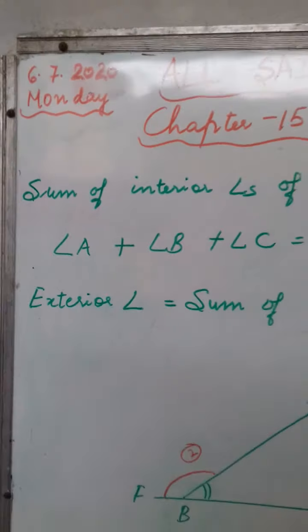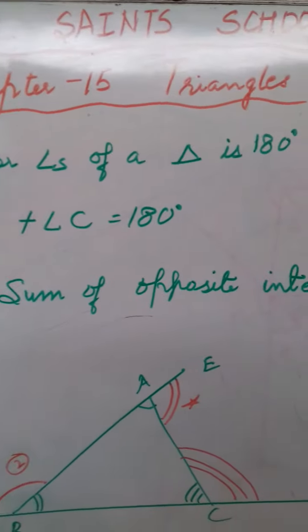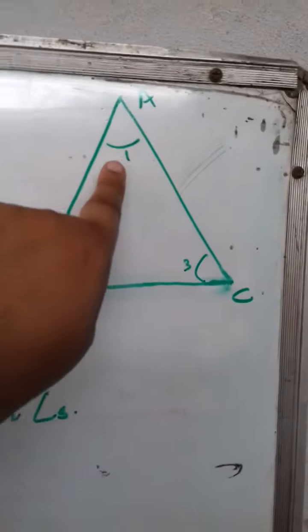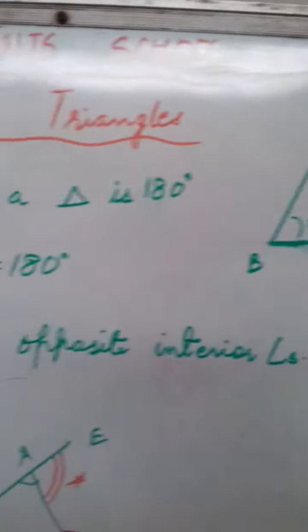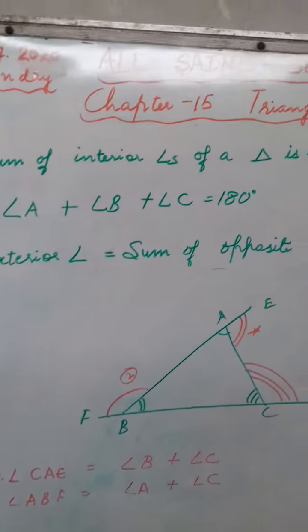Now first thing you should know is that sum of interior angles of a triangle is 180 degrees means this angle plus this angle plus this angle is equal to 180 degrees.